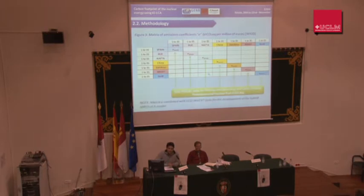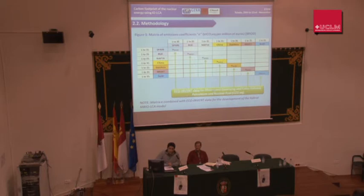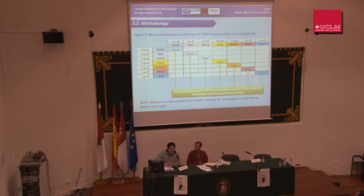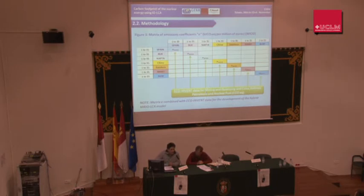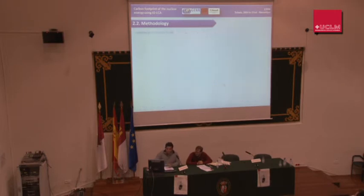As a novelty, we are going to develop a hybrid input-output life cycle assessment model using information from process LCA datasets. In this case, we are going to use information from ecoinvent data for some of the most important sectors, like mining and quarrying and co-refined petroleum and nuclear fuel, in the production process of the nuclear fuel cycle. We think this is very interesting because it allows us to solve the aggregation problem — using these specific coefficients, we can control exactly the emissions related to the process of extracting, for instance, uranium from the mines.